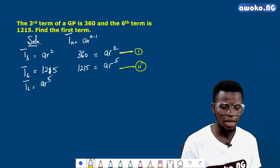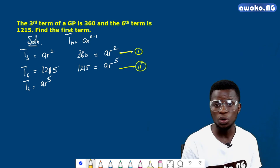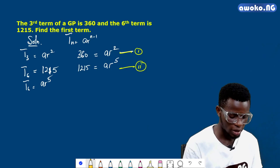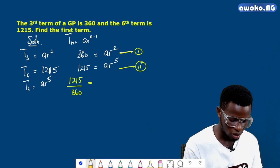We can decide to divide equation 2 by equation 1 or equation 1 by 2, whichever we want. So let us divide equation 2 by equation 1. To do that, we can reverse this to be 1215 over 360 equals ar⁵ over ar².